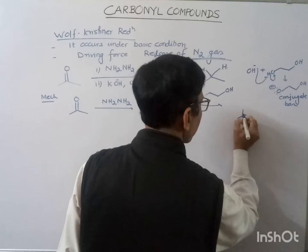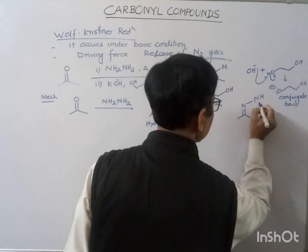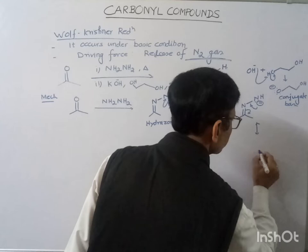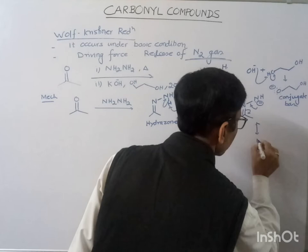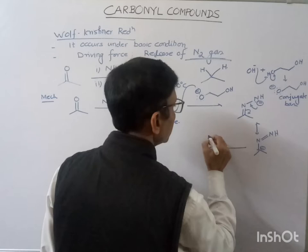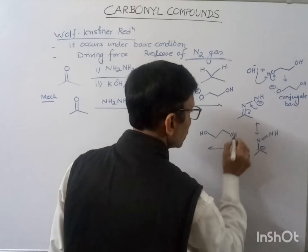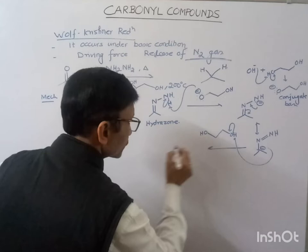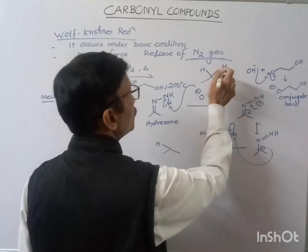We can write the resonance form of it. Again, we have ethylene glycol — it will now act as an acid, and this can take the proton from here. One of the hydrogens is added, so we have two hydrogens; in place of this carbonyl oxygen, two hydrogens are added.